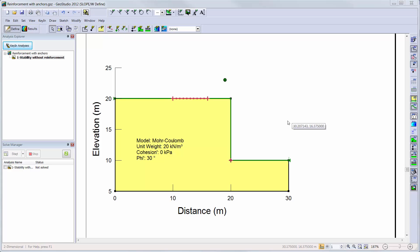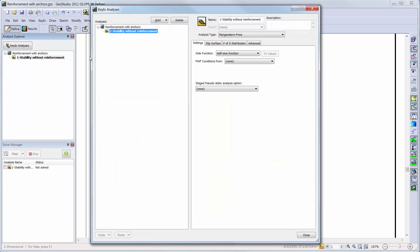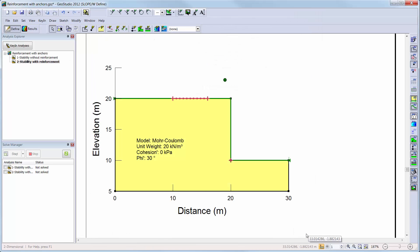We will go to Key In, Analyses, and clone the current Slope W analysis. We will keep all of the analysis parameters the same as the first analysis, and simply change the name of the clone to help differentiate between analyses.